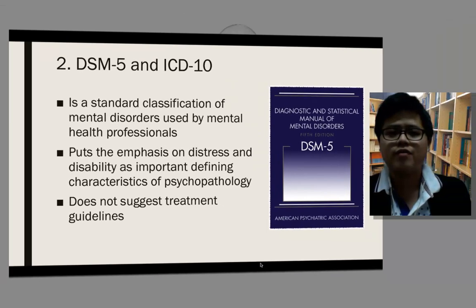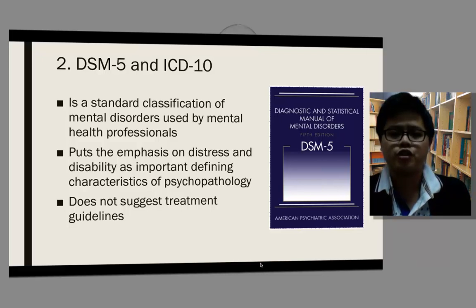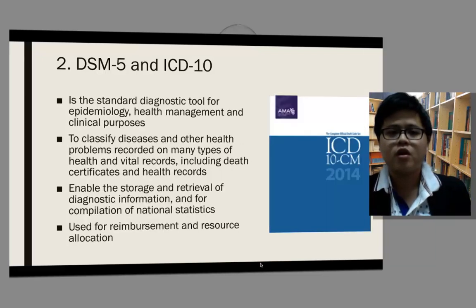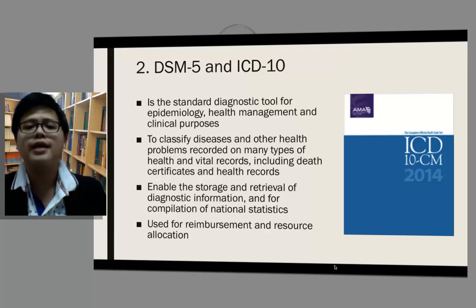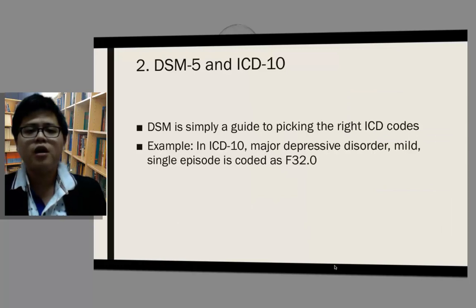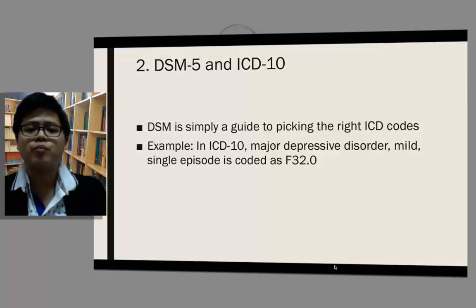For DSM-5 and ICD-10: DSM-5 is a standard diagnostic tool for epidemiology, health management, and clinical purposes. It is used to classify diseases and other health problems recorded on many official records, including death certificates and health records. It enables the storage and retrieval of diagnostic information and compilation of national statistics. It is also used for reimbursement and resource allocation during policy planning. The relationship between DSM-5 and ICD-10 is simple — DSM-5 is a guide to pick the right ICD-10 codes. For example, in ICD-10, major depressive disorder is coded as F32.0.